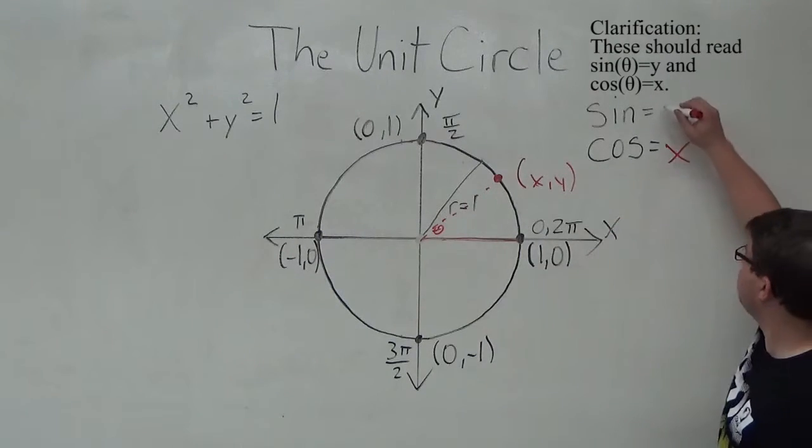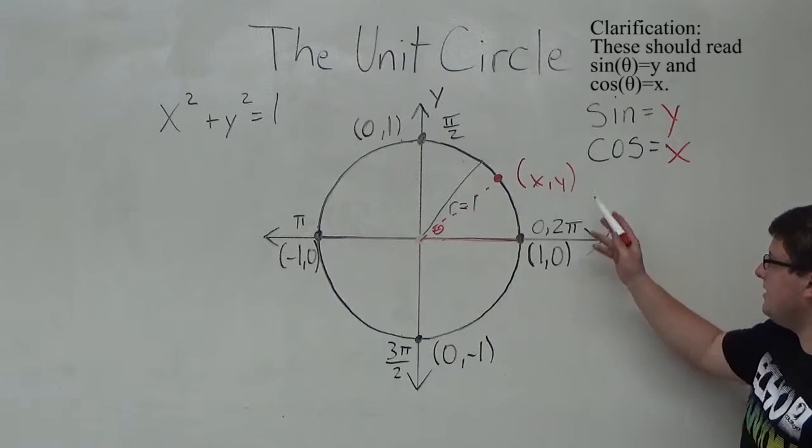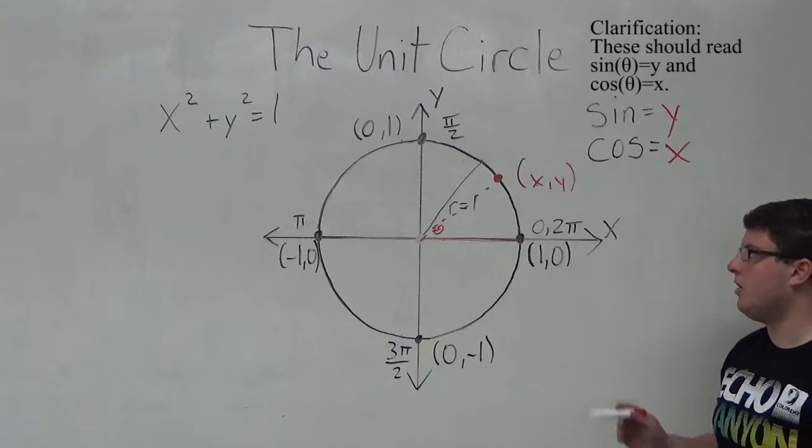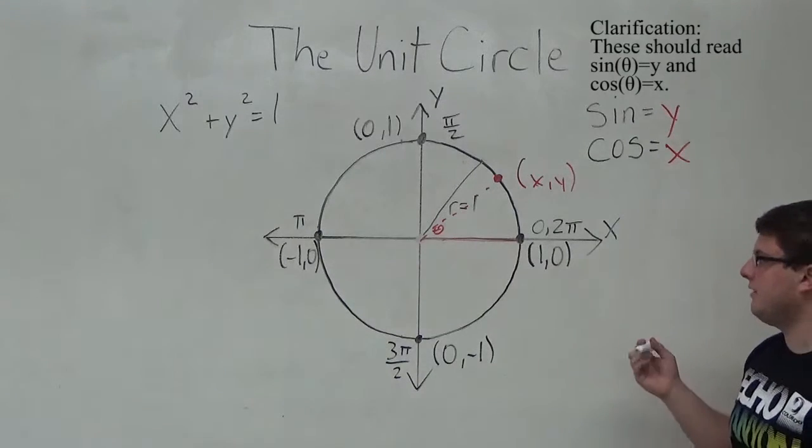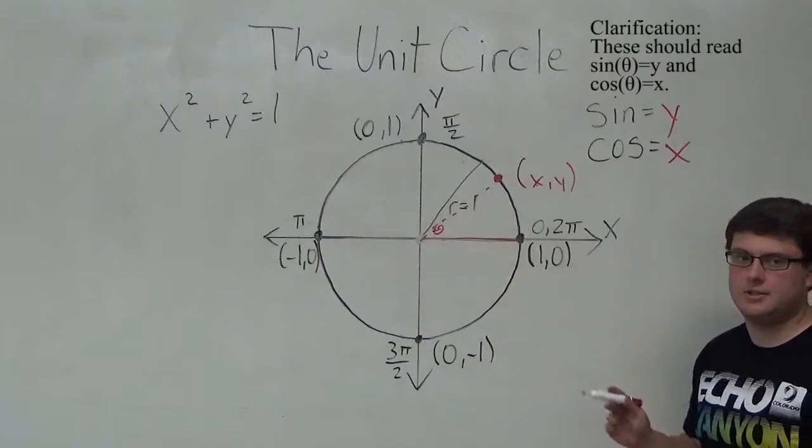For sine, it's the y-value. So you can use any set of points along the line to find the sine and cosine of an angle in relation to that point.